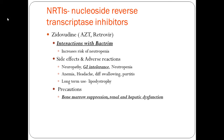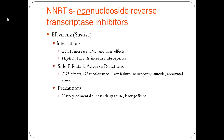With long-term use we see lipodystrophy — a change in adipose tissue. As a precaution, we would use this drug very carefully in patients that already have bone marrow suppression, such as an HIV-positive patient with leukemia, or a patient with renal or hepatic dysfunction. This is why it's important to check chemistries and look at BUN, creatinine, AST, and ALT values in our patients.